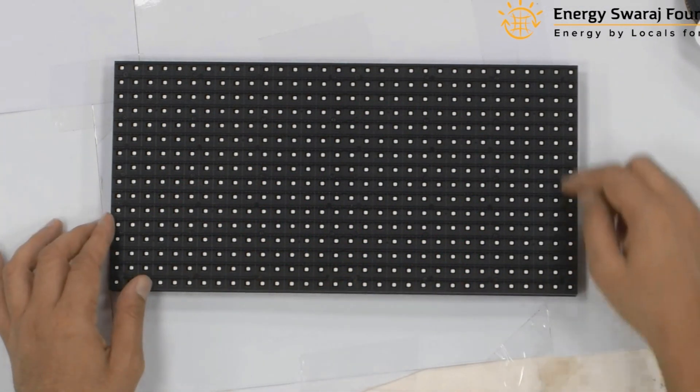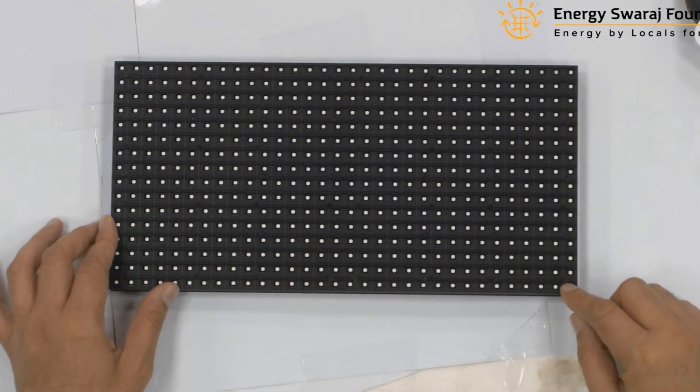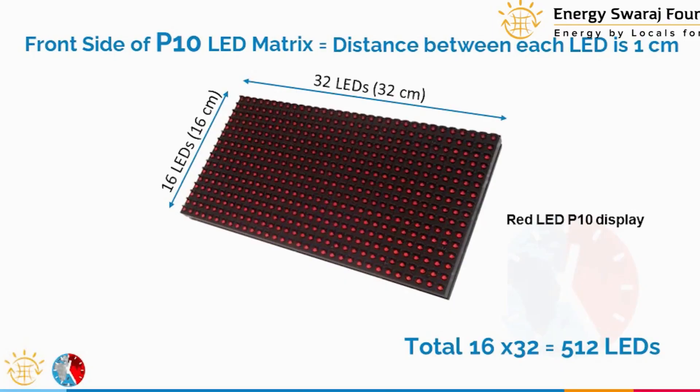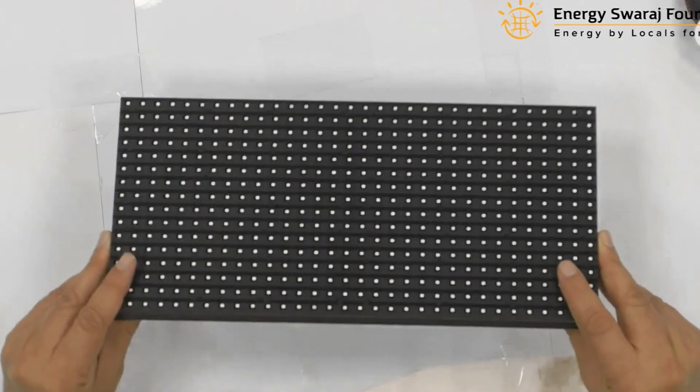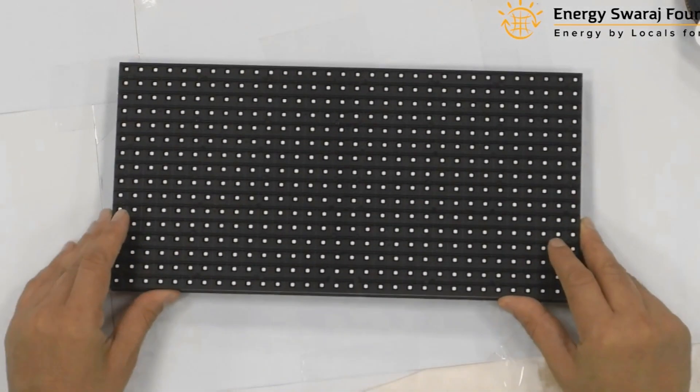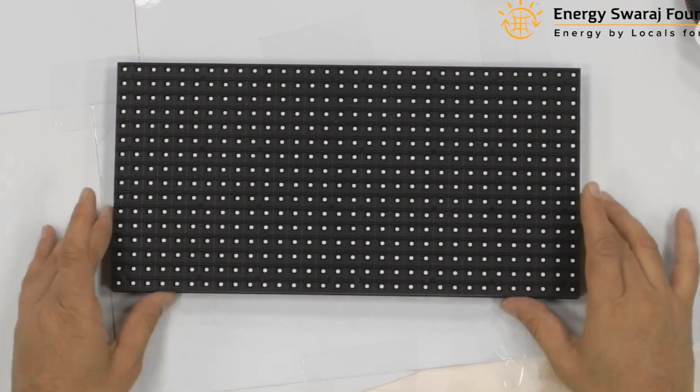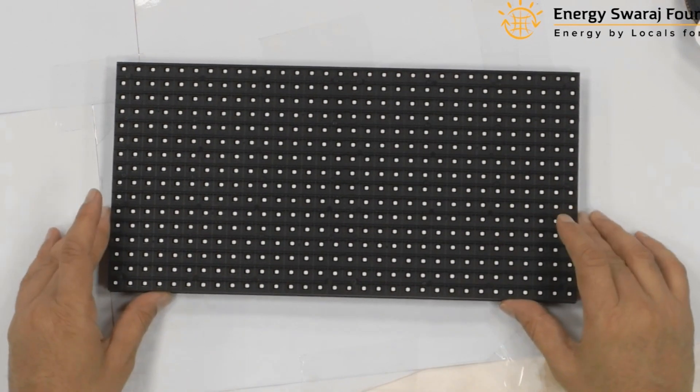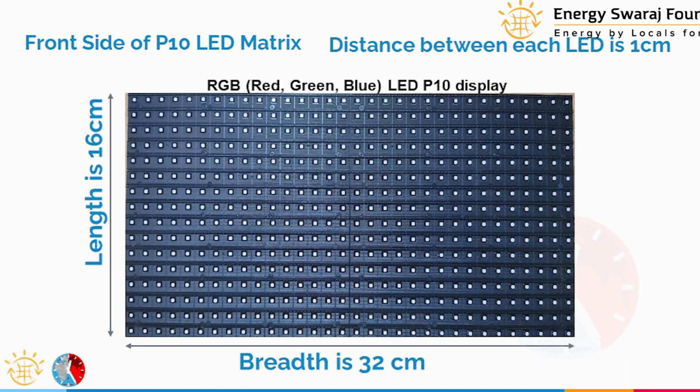Width-wise there are 32 LEDs, and height-wise there are 16 LEDs. When you multiply 16 by 32 you get 512 LEDs total in this display. In our climate clock it is much bigger — we are going to use three such panels connected together.